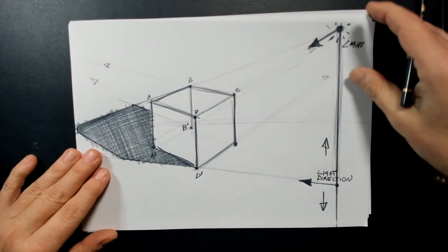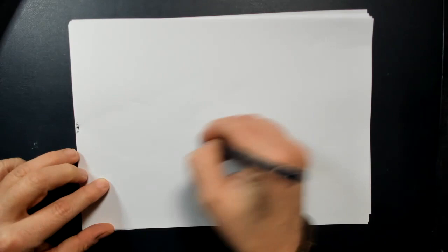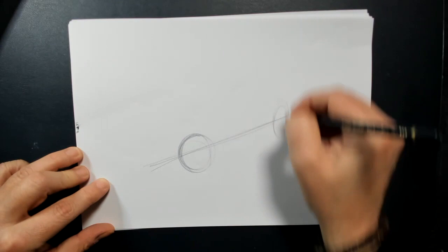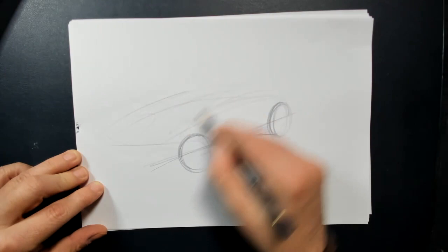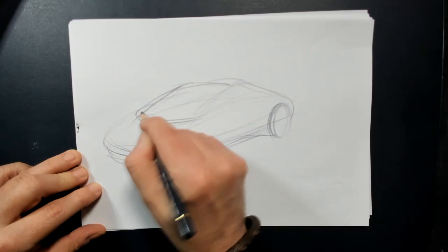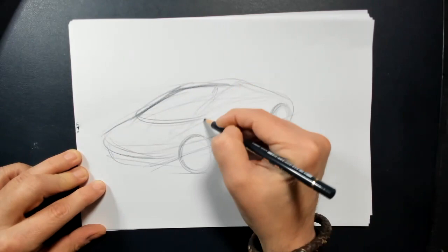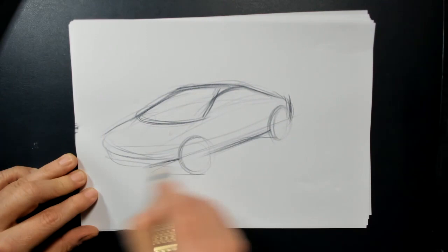This is the rule number one for the shadow, the cast shadow. Now when I have my side view of a car, let's make a quick sketch, very basic.